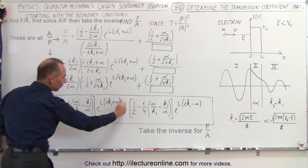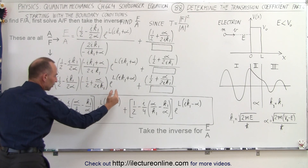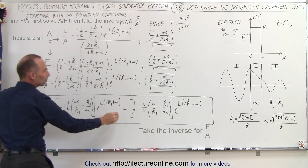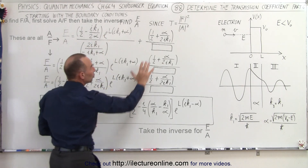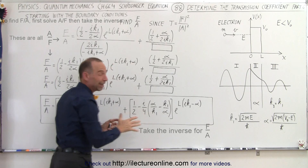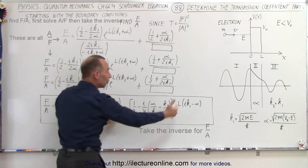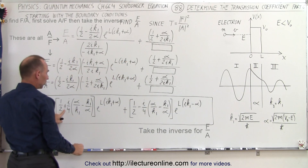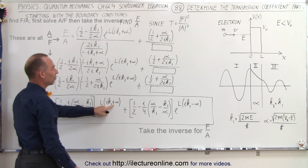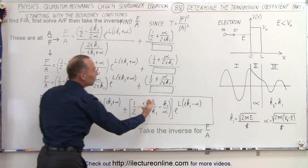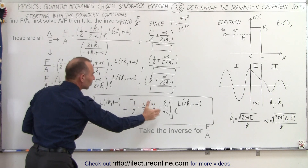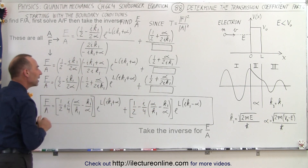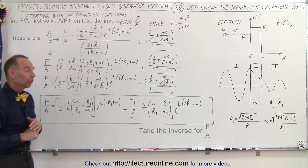When you multiply and simplify, you end up with an expression representing the first portion of the equation. Plus, when you do the same to the right side — we haven't done that yet, but if you did — you end up with a very similar expression. The only difference is you have a plus here versus a minus. When you add these two together, this is the ratio of F over A, which gives you the transmission coefficient.